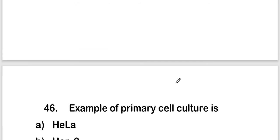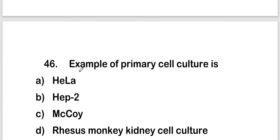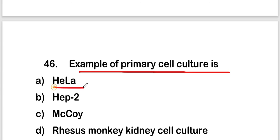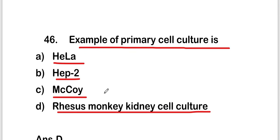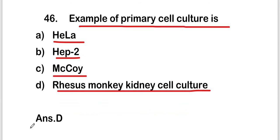The next question is: an example of primary cell culture is HeLa cell, Hepto, McCoy, or rhesus monkey kidney cell culture? The right answer is option D, that is rhesus monkey kidney cell culture is the primary cell culture.